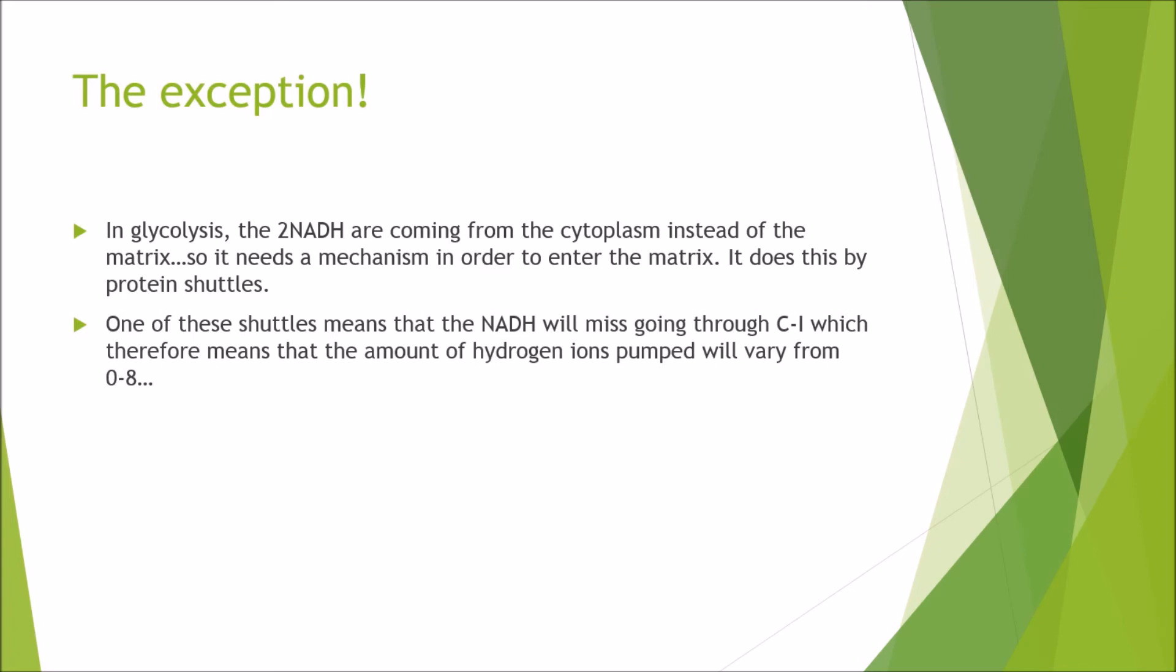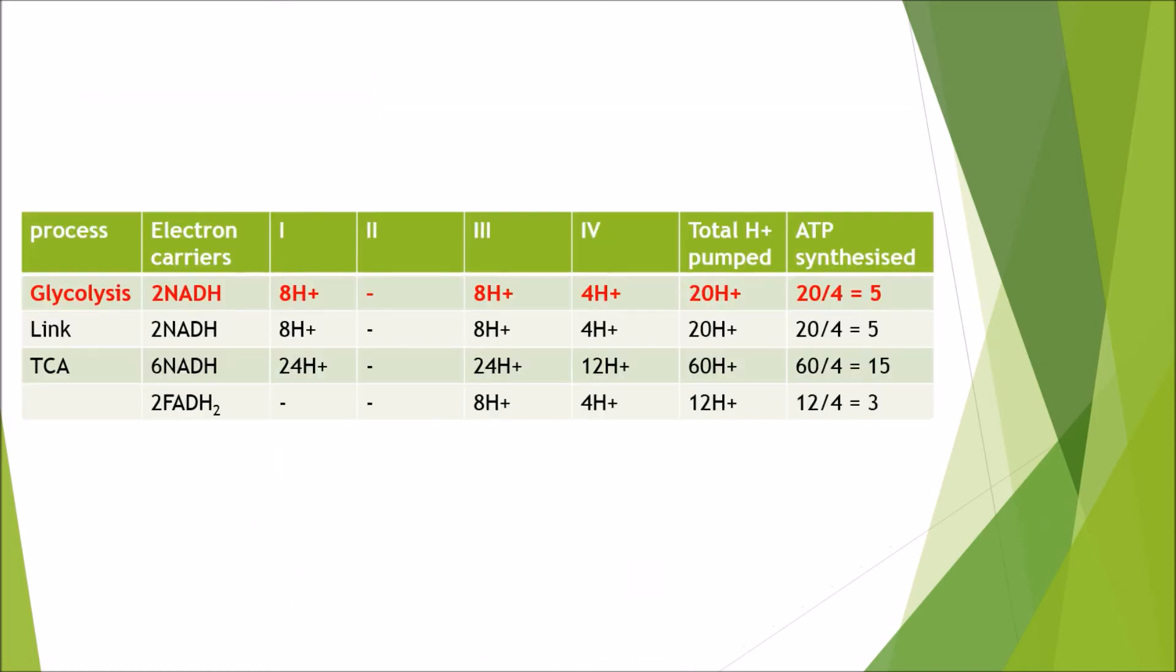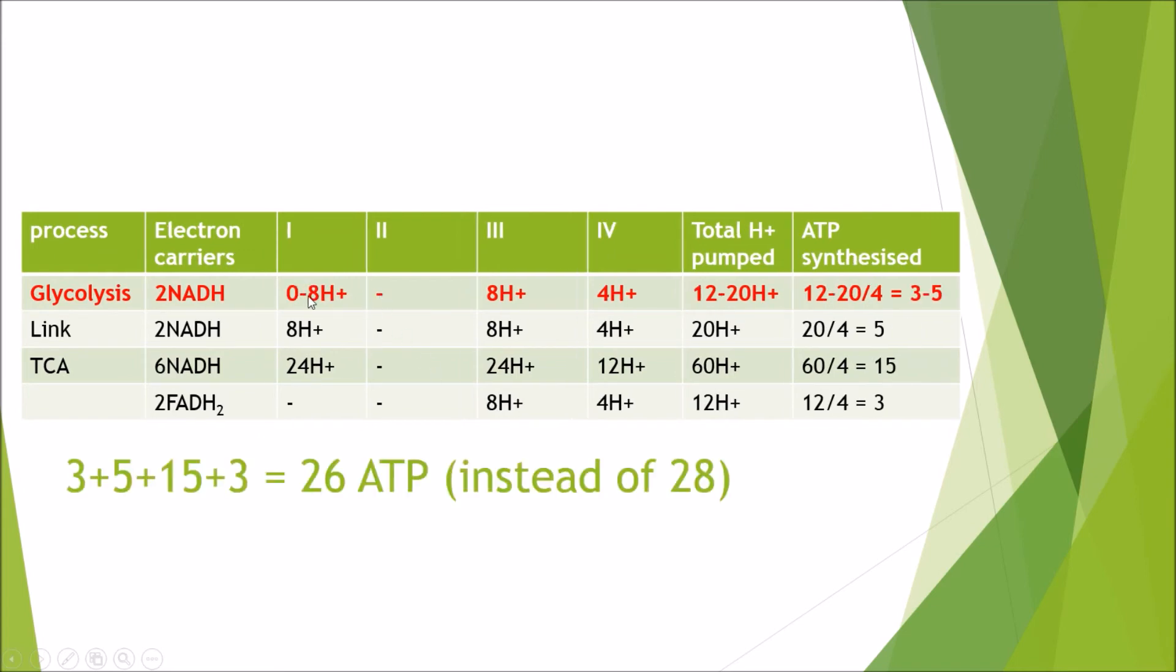One of these shuttles means that when the NADH will pass into the matrix, it will miss going through the first complex, which therefore means that the amount of hydrogen ions pumped will vary from zero, so none at all from those NADHs, to eight, which is the possible maximum. And now you're probably confused, like, what is science? What is going on? But don't worry, it's not as complicated as what you think it is. So here I've got glycolysis highlighted again. This is what we had before. We've got the two NADHs and in complex 1 is when we get the eight hydrogen ions pumped. But obviously if it skips, we'll get a variance of zero to eight. And all that does is just change the total amount of hydrogen ions pumped from 20 to around about 12 to 20. And as a knock-on effect we get about three to five ATP produced instead of smack on five.